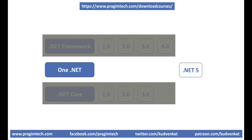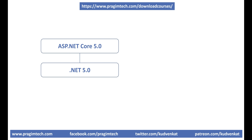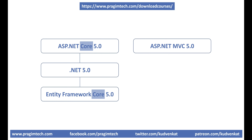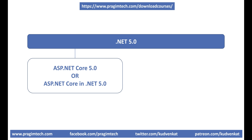Another important point regarding naming conventions: ASP.NET Core 5 is based on .NET 5, but it retains the name Core to avoid confusing it with ASP.NET MVC 5. Along the same lines, Entity Framework Core 5 retains the name Core to avoid confusing it with Entity Framework 5. So, the terms ASP.NET Core 5 and ASP.NET Core in .NET 5 are used interchangeably.